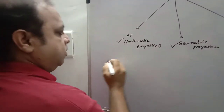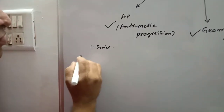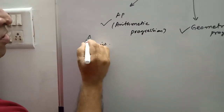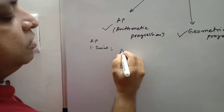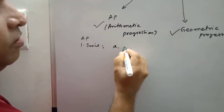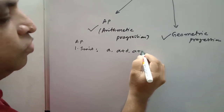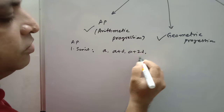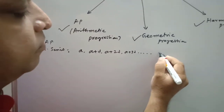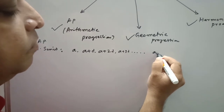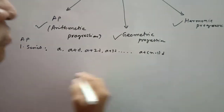So now in AP, number one is series. What is AP series? AP means arithmetic progression series. The series goes: a, a plus d, a plus 2d, a plus 3d, and so on to the nth term. The nth term is called a plus n minus 1 into d. This is the nth term.